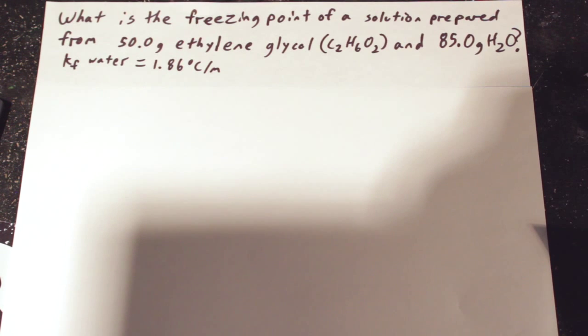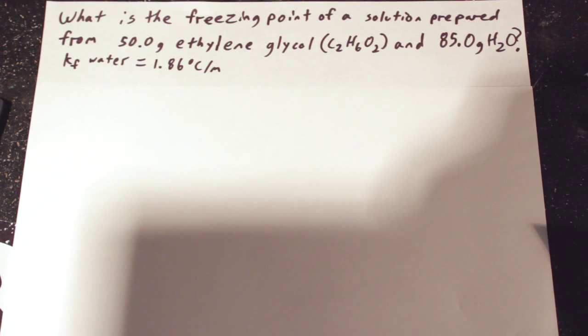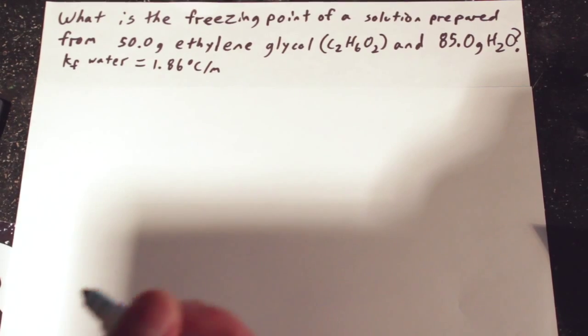Hey guys, how's it going? I'm going to help you solve a freezing point depression problem. The problem goes, what is the freezing point of a solution prepared from 50 grams of ethylene glycol and 85 grams of H2O? The KF of water is 1.86 Celsius over molality.